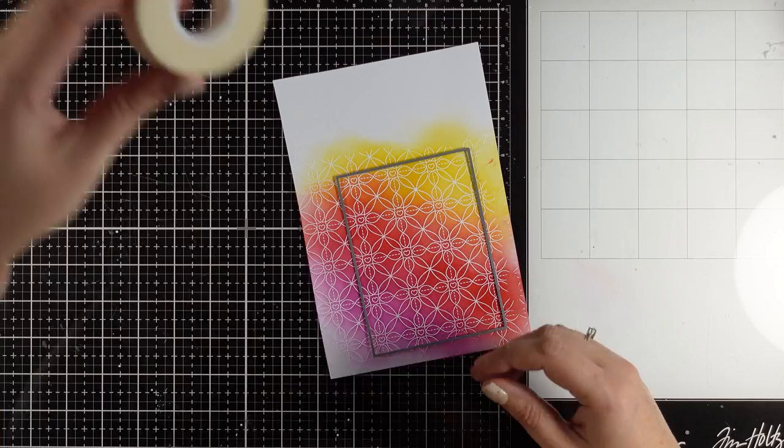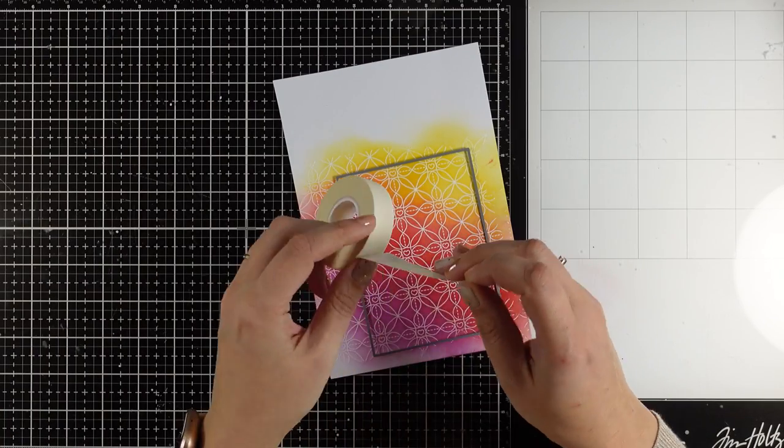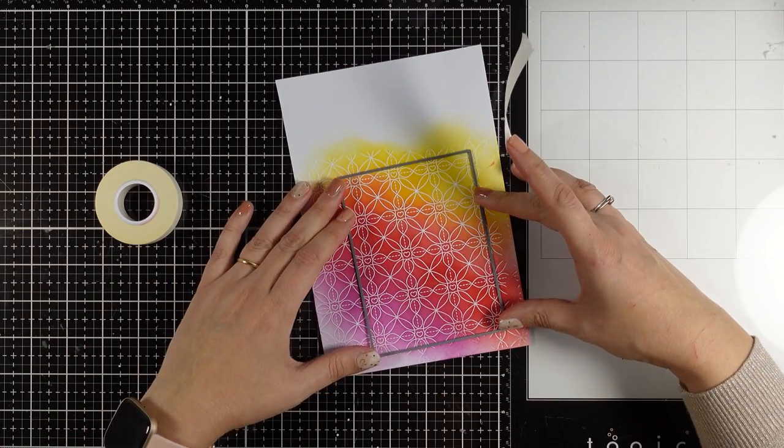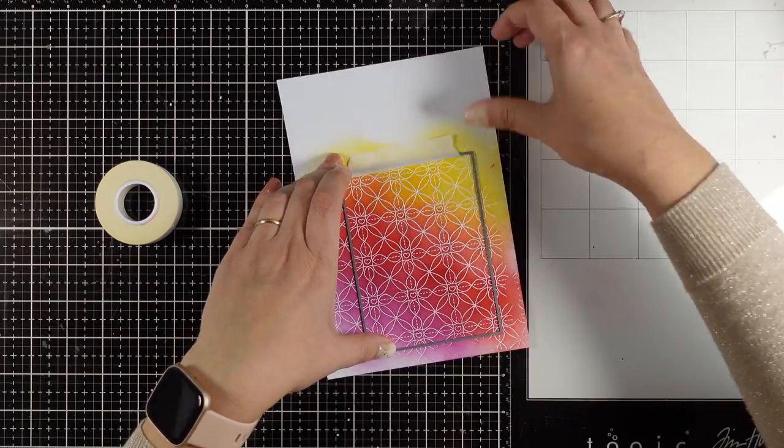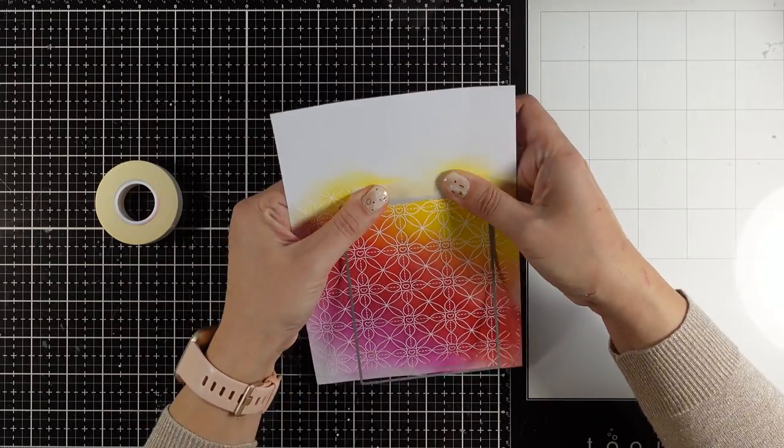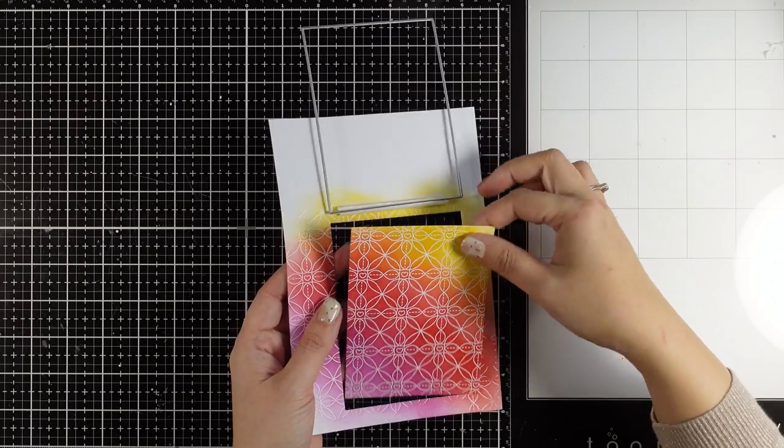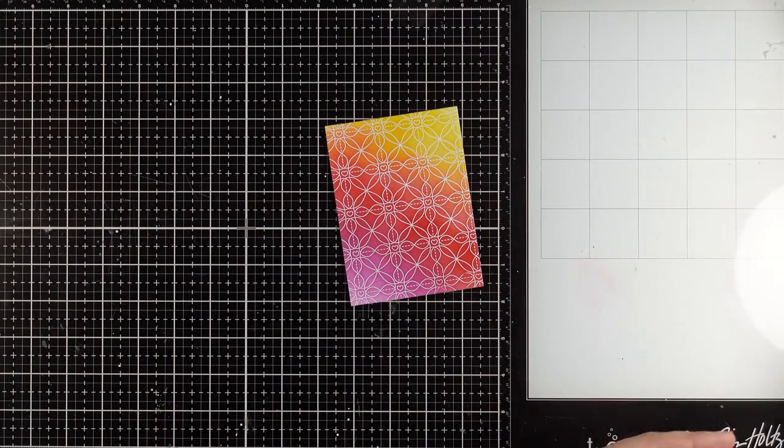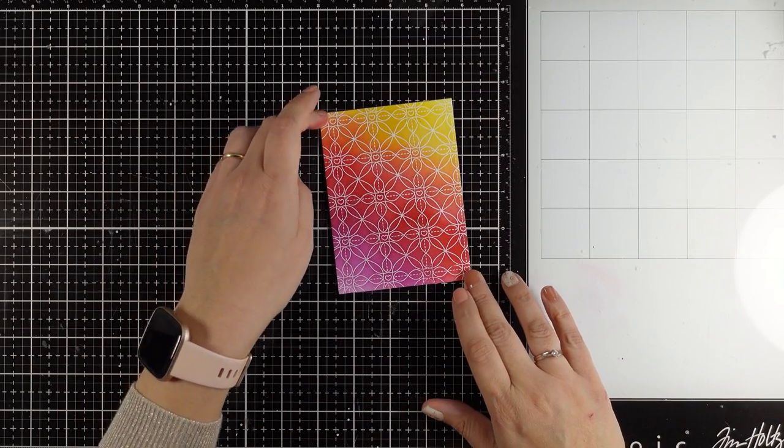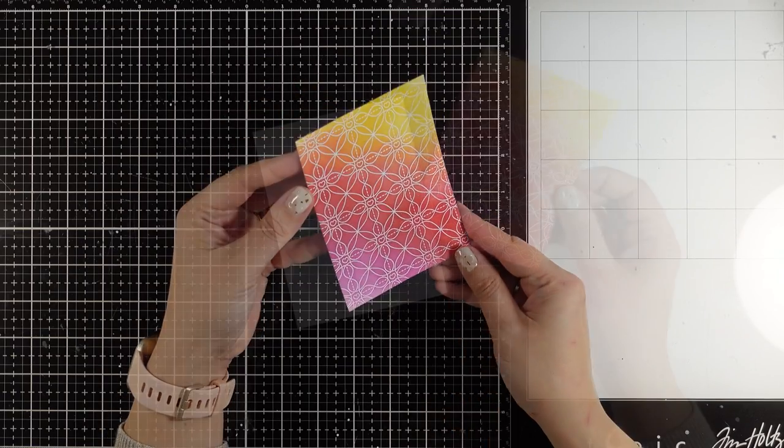I'm going to use a rectangle die and cut out a panel which is going to be the background for my card. I like to secure down my die by using a very low tack tape, and then I'm going to run it through my die cutting machine. Here is the background ready to go.